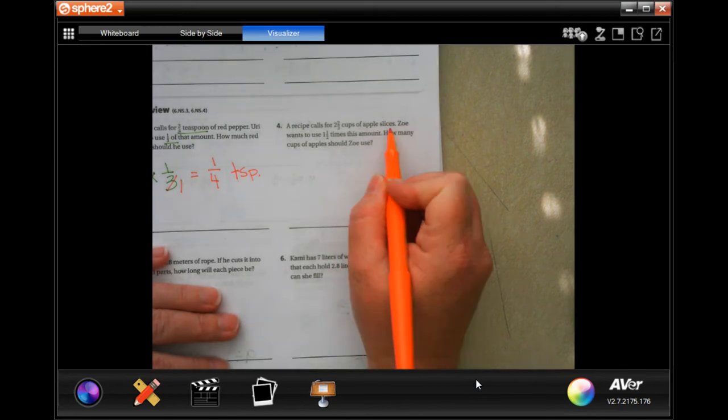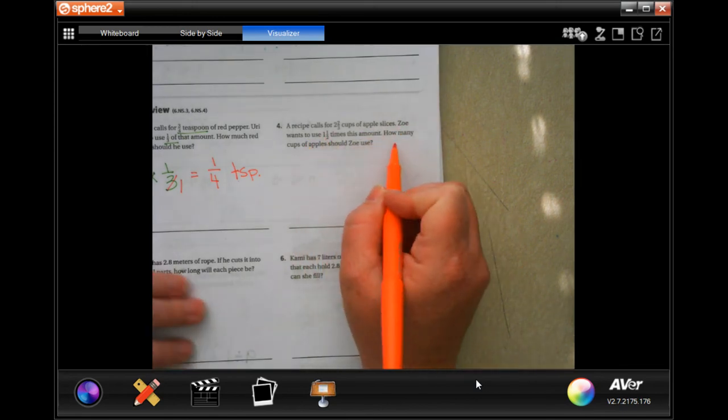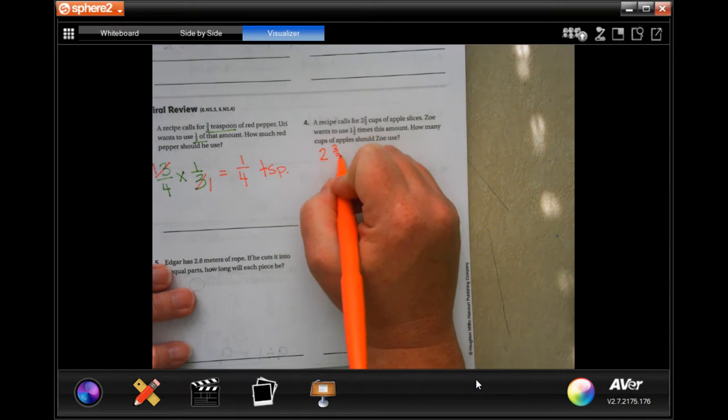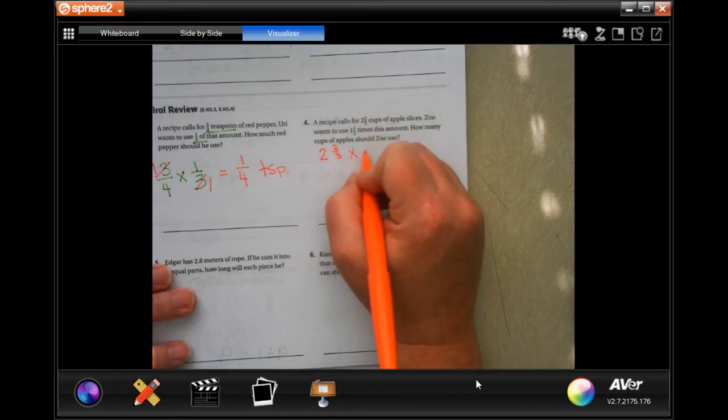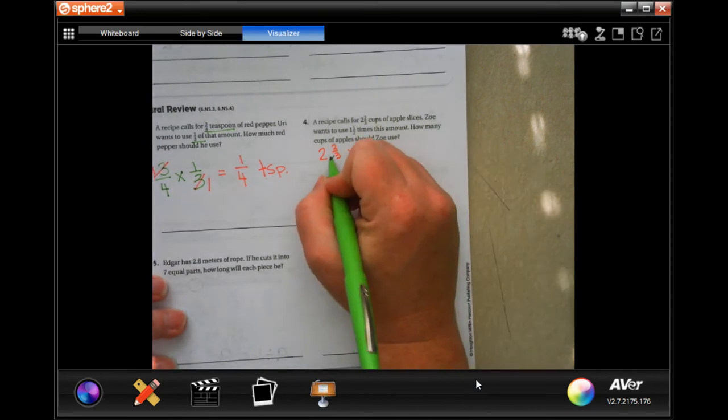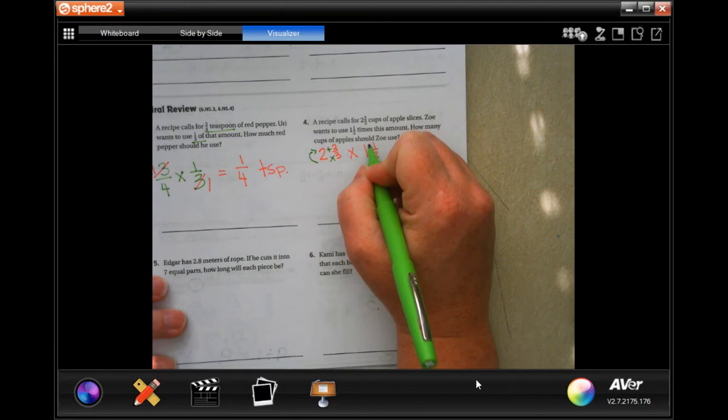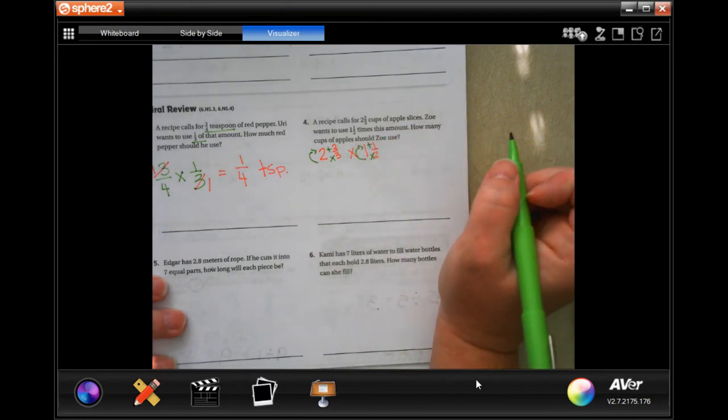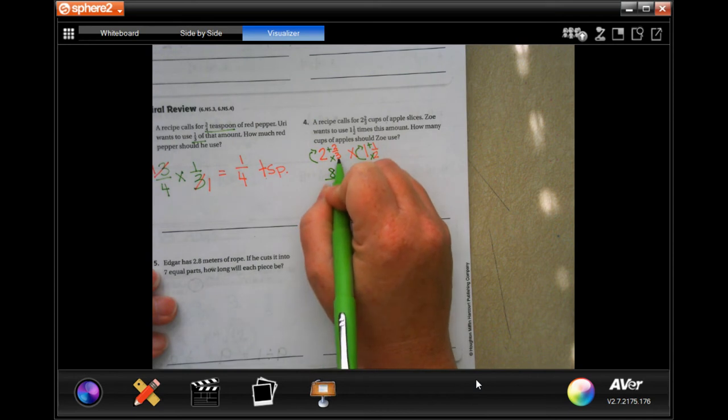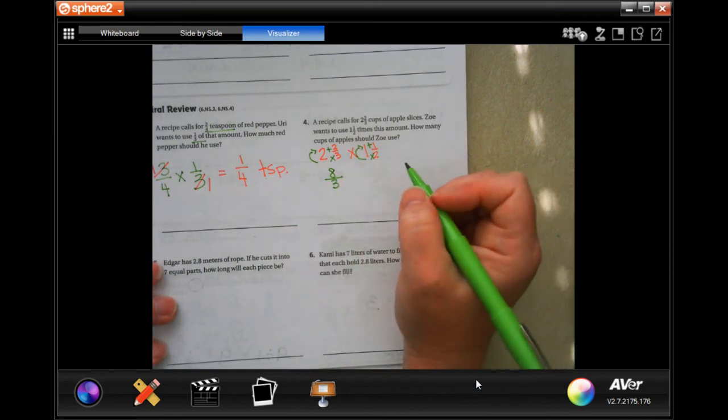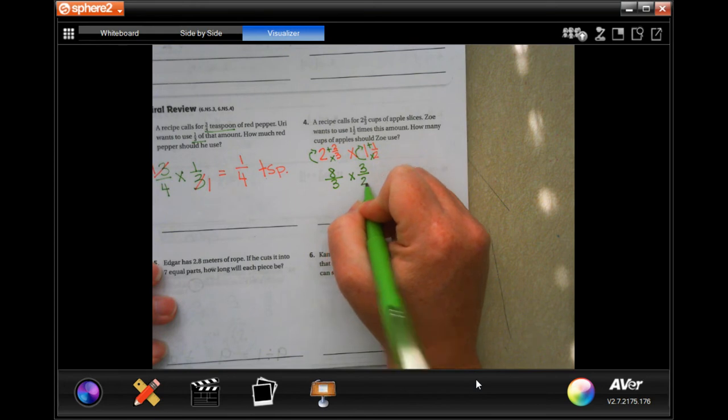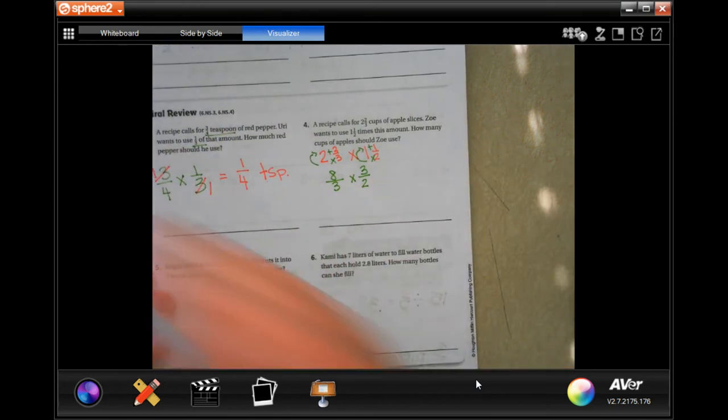The recipe calls for 2 and 2 thirds cups of apple slices. Zoe wants to use one and a half times this amount. How many cups of apples should Zoe use? So I'm going to write down our 2 and 2 thirds. And she wants to use one and a half times of that amount. So I'm going to do dead man and turn these into improper fractions. We call it dead man because it looks like a dead man when we do that. You turn it sideways. So 3 times 2 is 6 plus 2 more is 8. And I'm going to keep my denominator so it's 8 over 3. Still have a. That doesn't change. 2 times 1 is 2 plus 1 more is 3. Keep my denominator. That doesn't change. So now I have 2 improper fractions. That's perfect.